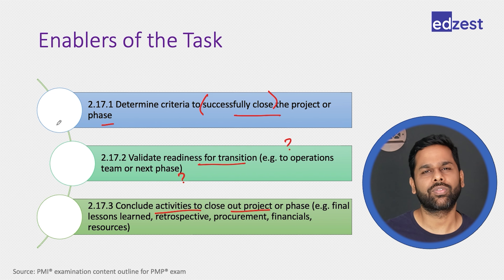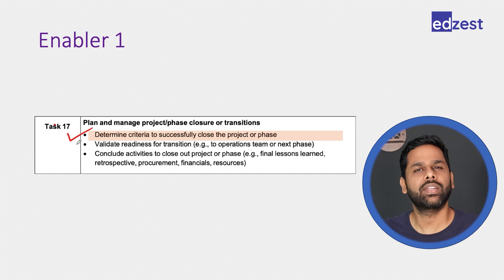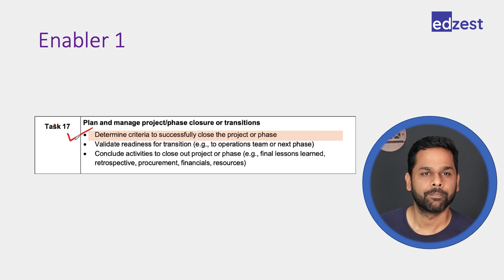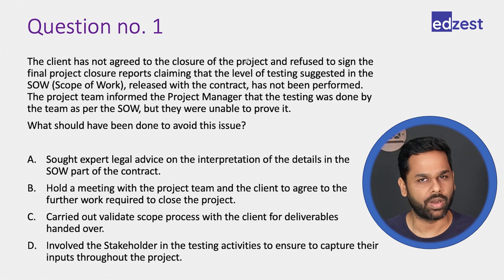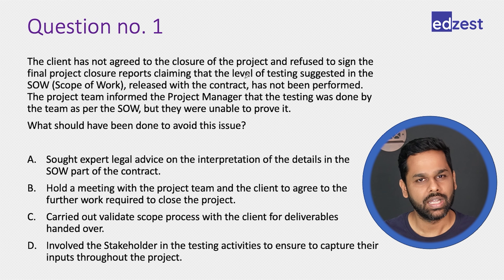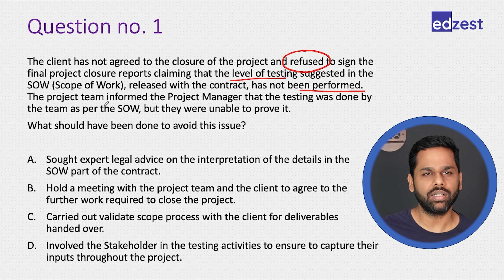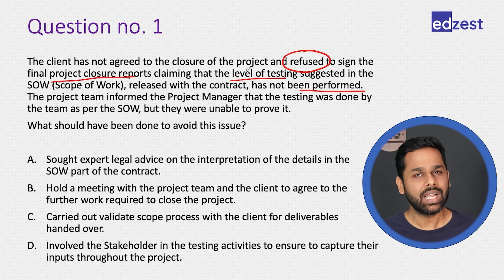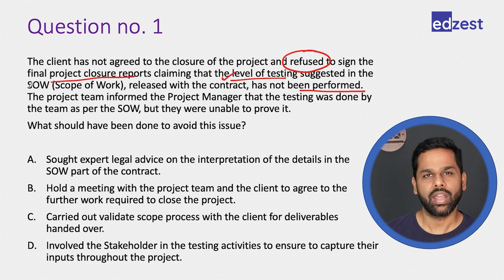Let us see what type of questions can be framed starting with task number one — determining criteria to successfully close the project. The client has not agreed to the closure of the project and refused to sign the final project closure report, claiming that the level of testing suggested in the scope of work released with the contract has not been performed. The client has refused to sign, saying testing was not done as per the level suggested in the SOW.